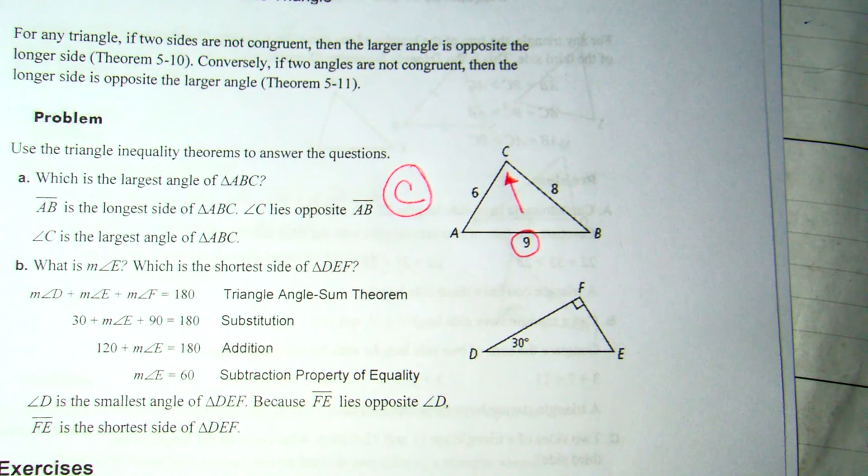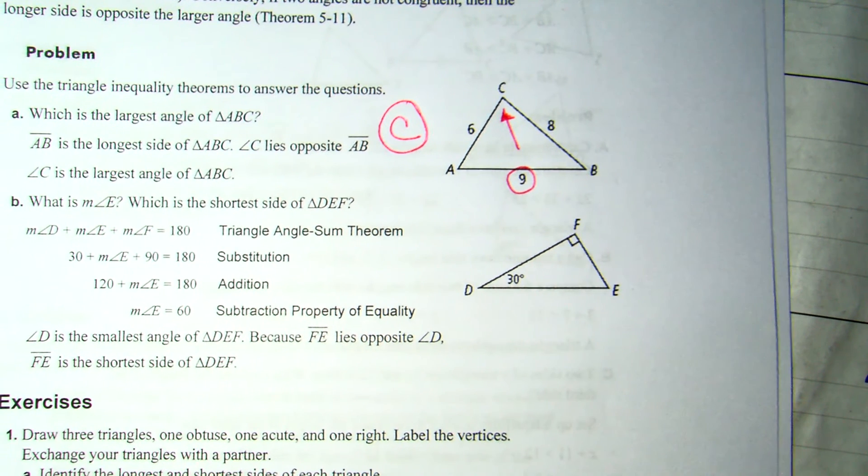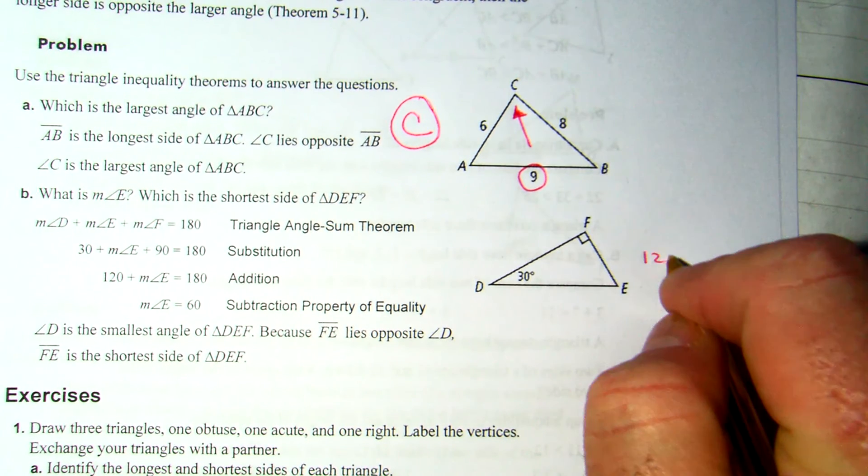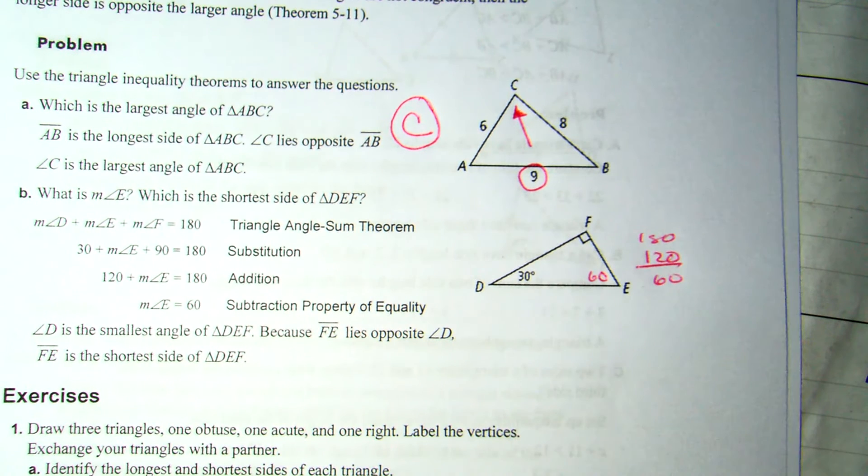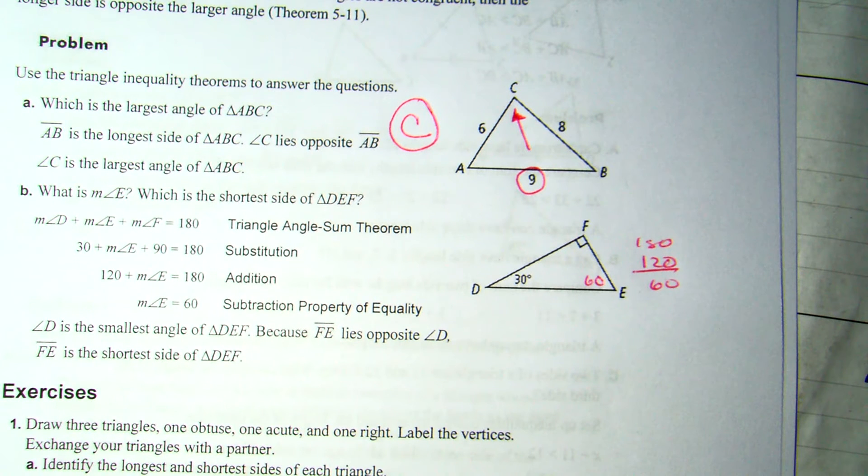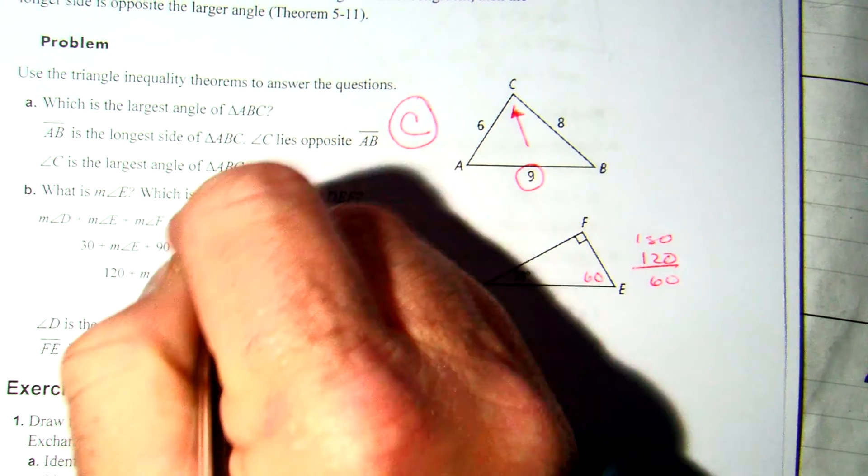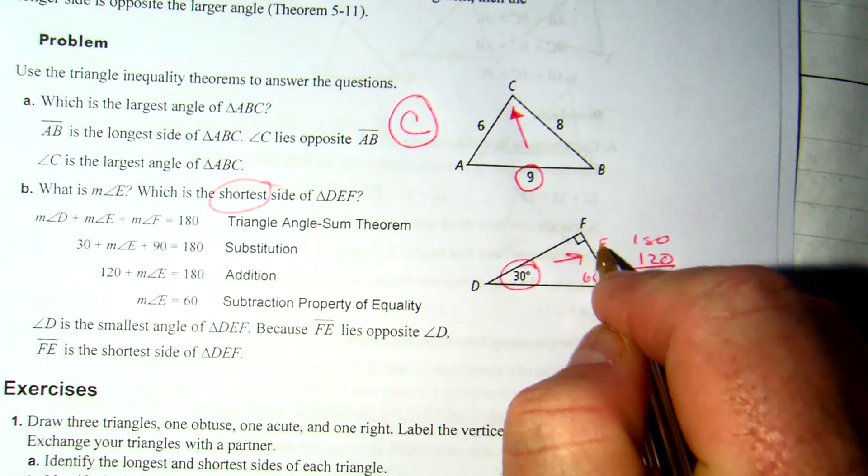Now in the next one they ask what is the measure of angle A with the shortest side DEF. So the triangle adds up to 180. 30 and 90 is 120. You subtract that from 180 and we get 60. So they may not give you all three angles. You have to use the triangle angle sum to get the third angle. It makes 30, 60, 90, and they want the shortest side. You circle the smallest angle, which is 30. That makes your smallest side C.